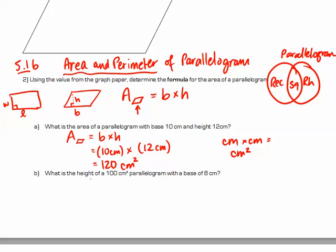Now a second example is the question, what is the height of a 100 centimeters squared parallelogram with a base of 8 centimeters? So let's just plug in this information in our formula. Area is equal to base times height. Now we know this part, and this 100 centimeters squared is the area. We know the base is 8 centimeters. And what we don't know is the height. So the height is the one that's our question mark right now.